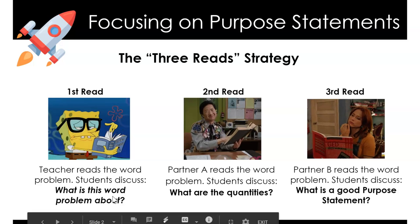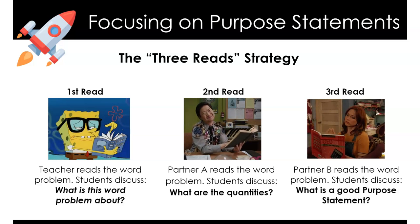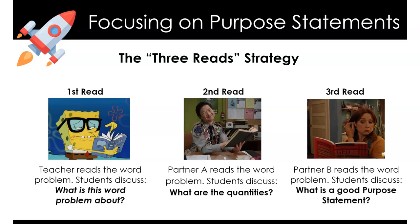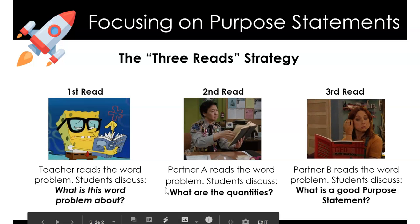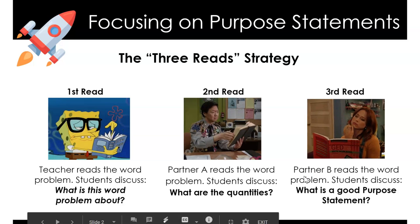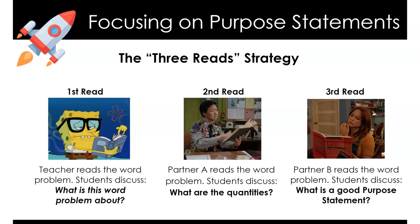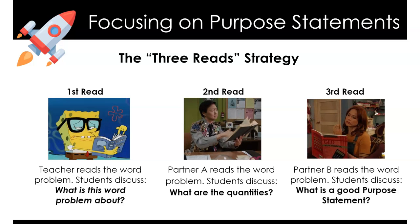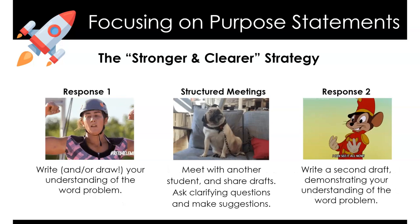On the first read, the question is: what is this problem about? Read through and try to answer just that — don't get bogged down in distances or numbers. Then on the second read, ask: what are the quantities involved? Are these miles, money, number of people? We're still not trying to solve the problem. On the third read, we'll try to pull those things together into a purpose statement.